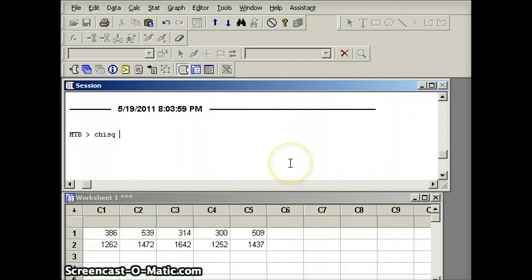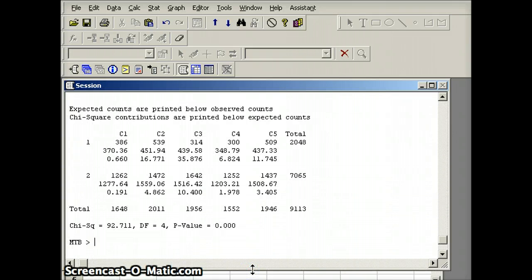Our data is in columns C1 through C5. So the command is CHISQ chi-square, C1 through C5. And then we'll see what those results look like.